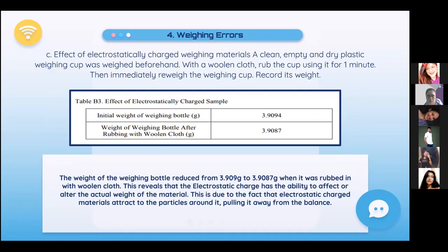Effect of Electrostatically Charged Weighing Materials: A clean, empty, dry plastic weighing cup was weighed, then rubbed with a woolen cloth for one minute and immediately reweighed. The initial weight was 3.9094 g; after rubbing, 3.9087 g. The weight was reduced, revealing that electrostatic charge has the ability to affect or alter the actual weight of a material. This is because electrostatically charged materials attract particles around them, pulling them away from the balance.